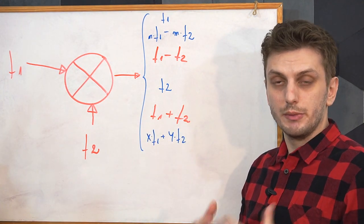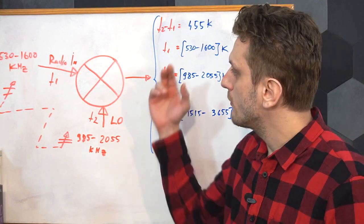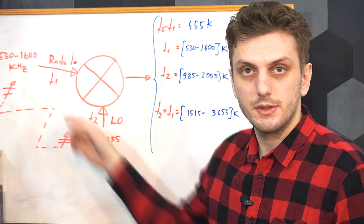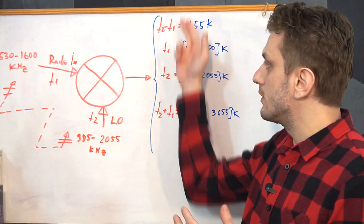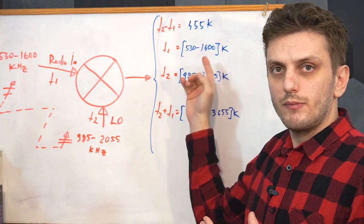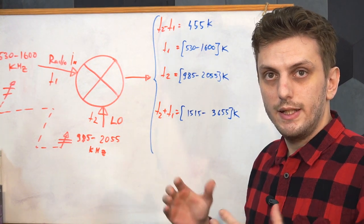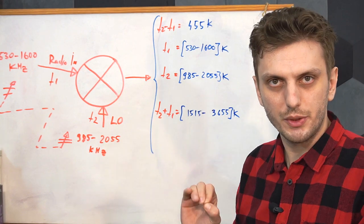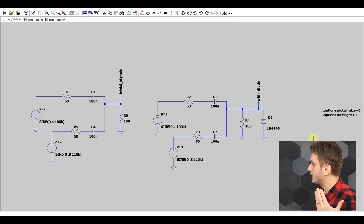Depending on what you're using the mixer for, having the initial signals may not always be a problem. For example, in a superheterodyne AM receiver, your input radio frequency is between 530 and 1600 kHz, and your local oscillator goes between 985 and 2055 kHz. The intermediate frequency is so far away from everything else that it's very easy to filter out, so the initial frequencies bundled together aren't a big deal. This sort of mixer can be built easily using a single non-linear element — a single diode.